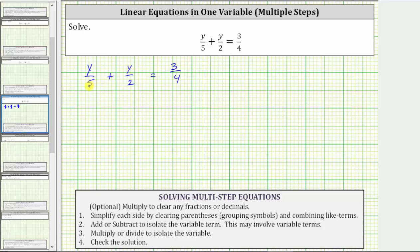If we have a denominator of 5 and 2, the least common denominator is 10, which means we need to write both fractions as equivalent fractions with a denominator of 10. So for y over 5, we multiply the top and bottom by 2, and for y over 2, we multiply the top and bottom by 5.